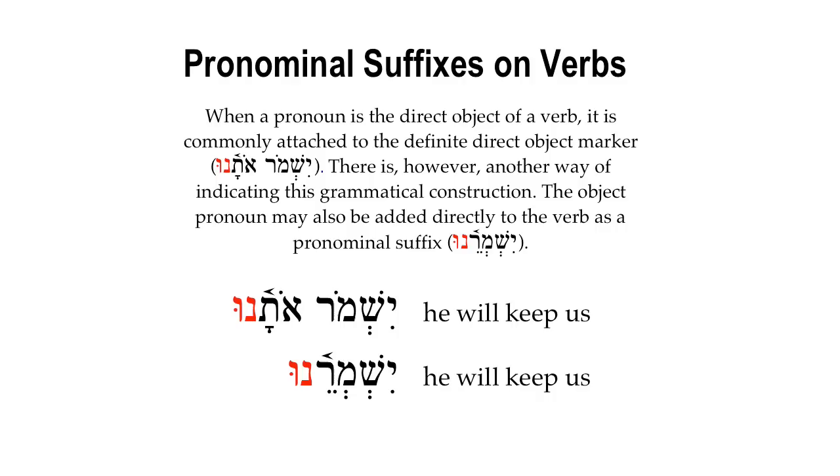So it's the same suffix, -o, but it's translated either possessively as 'his,' or objectively as 'him.' Now when it comes to verbs, we're going to be using the objective translation value.